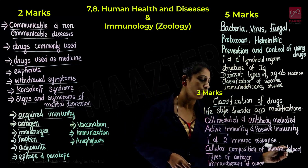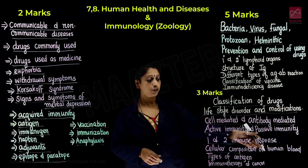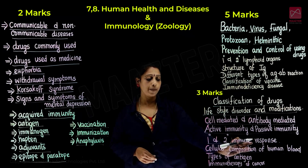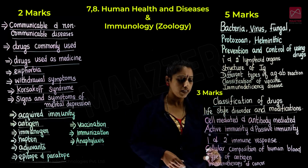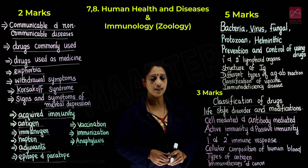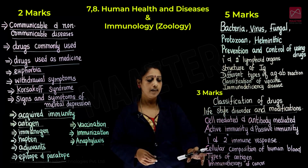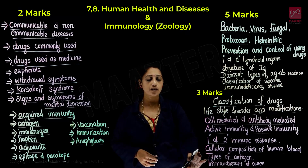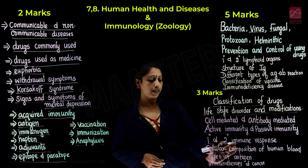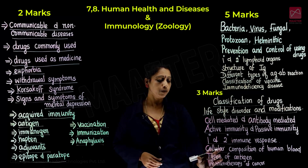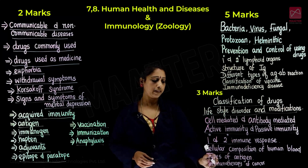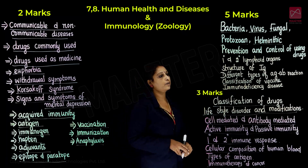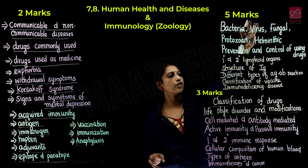Important topics include the cellular composition of human blood — a tabular column will be there as a question. Types of antigen — exogenous and endogenous antigen — this is the maximum tabular column type question. Immunotherapy of cancer gives three more questions, and in the next five more questions, we will find this section on Human Health and Diseases.